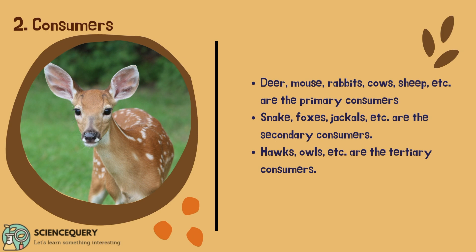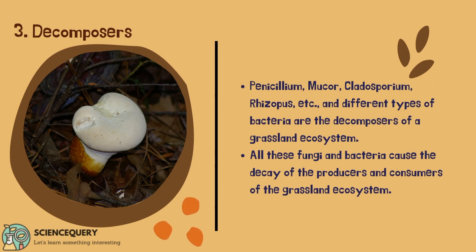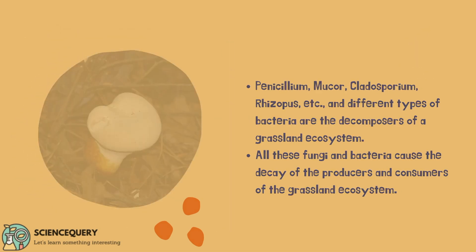Snake, fox, jackal, etc. are the secondary consumers. Hawks, owls, etc. are the tertiary consumers. The third biotic factor of the grassland ecosystem is the decomposers. Penicillium, mucor, cladosporium, rhizopus, etc. and different types of bacteria are the decomposers of a grassland ecosystem. All these fungi and bacteria cause the decay of the producers and consumers of the grassland ecosystem.